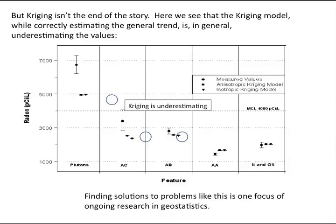Kriging isn't the end of the story, though. Here we see the Kriging estimates alongside the actual data. The highest values in this slide are the actual data, whereas the lower values are the Kriging estimates. You can see that while Kriging is predicting the general trend of the data, it's actually underestimating the values. Finding solutions to a problem like this is one focus of my ongoing research in geostatistics.